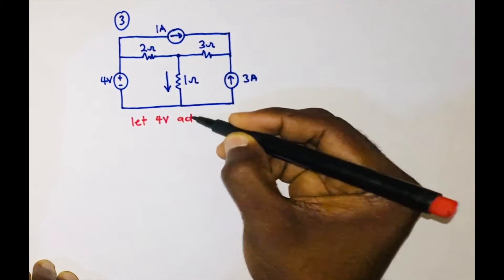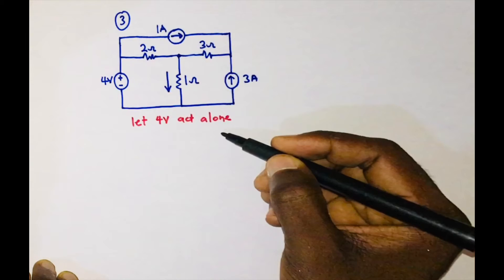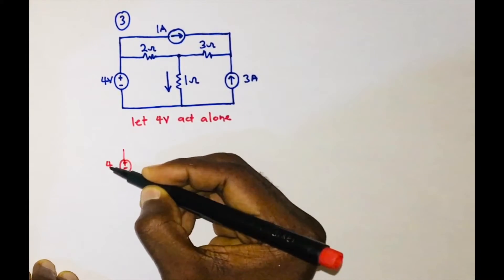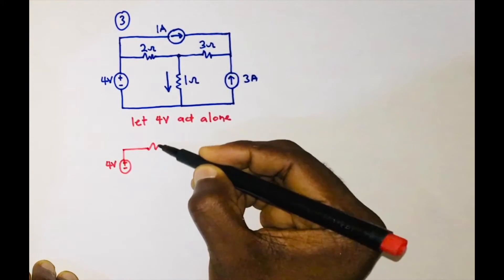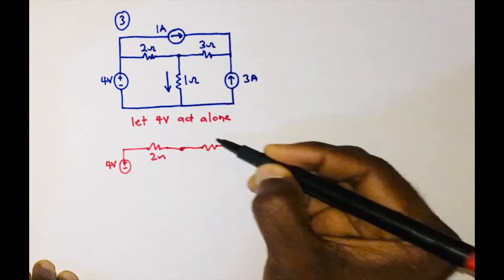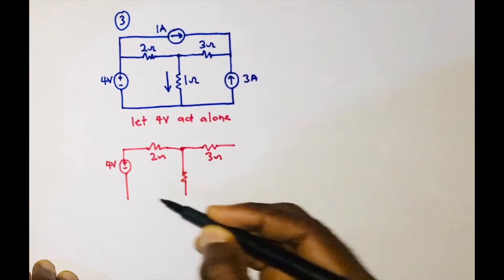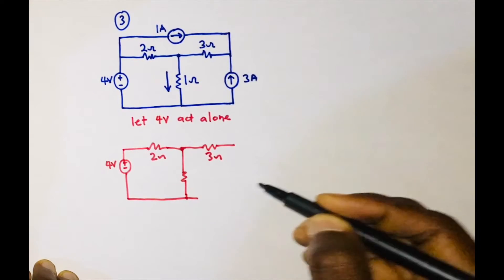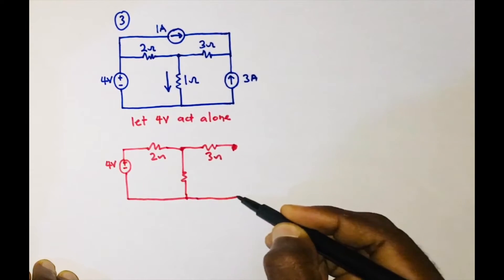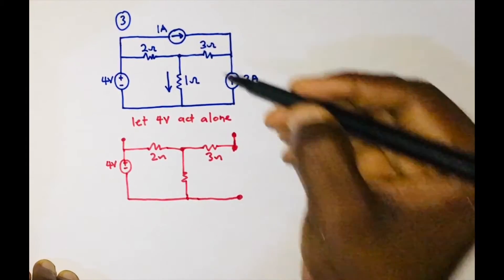If the four volts is acting alone, let's redraw the circuit. We have the four volts, the two ohm resistor, the three ohm resistor, and the one ohm resistor. Because we have a current source here, it is going to be an open circuit. We also have an open circuit here because we have the one ampere current source.